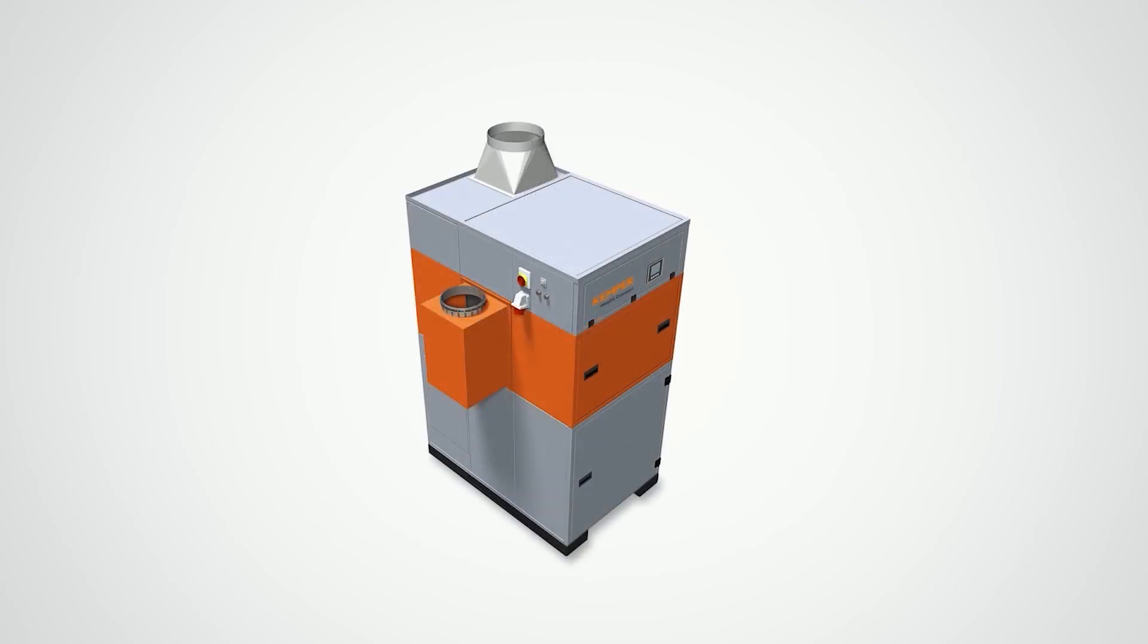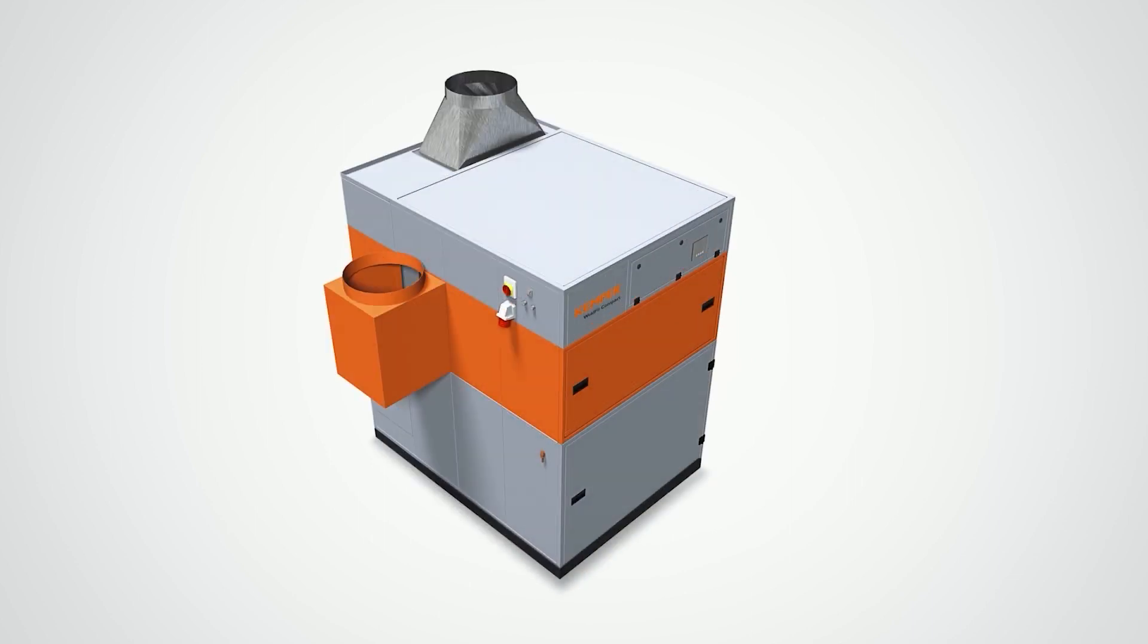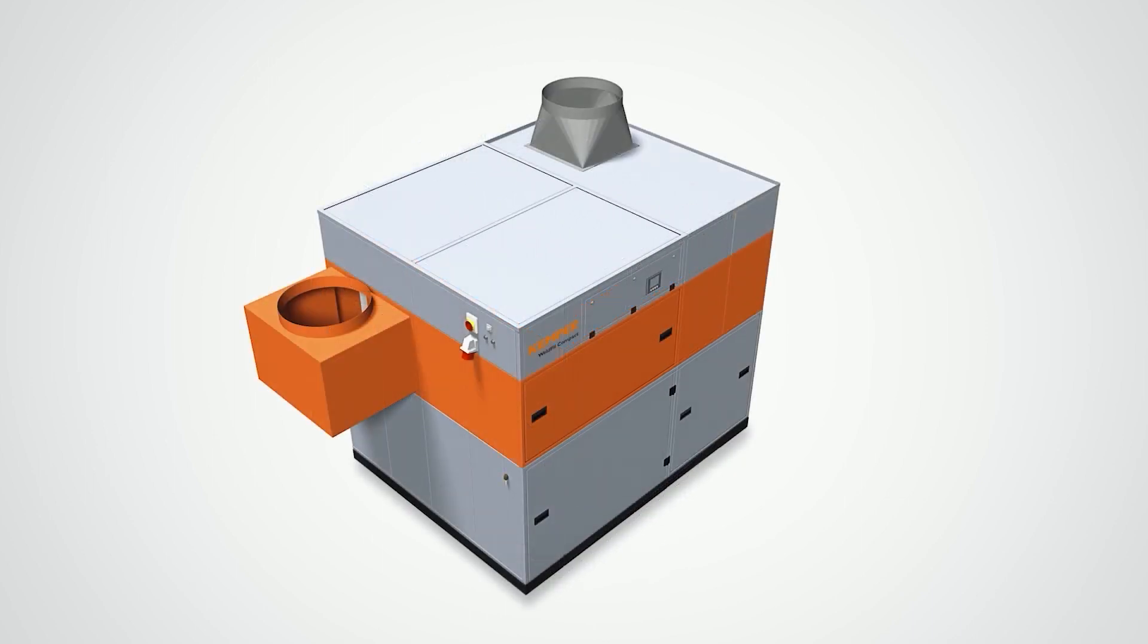Weldfill Compact is available in various versions with an extraction capacity of up to 9000 cubic meters of air per hour and a filter surface of 120 square meters.